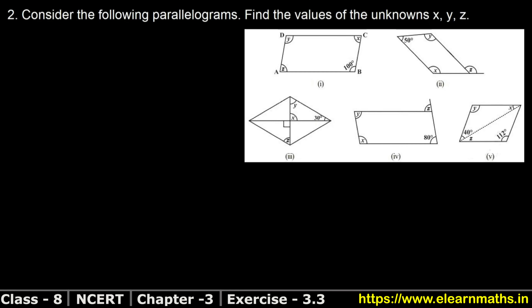Let's do question number two of exercise 3.2, that is Understanding Quadrilaterals. Question number two says: consider the following parallelograms and find the values of unknowns x, y, z. In the figures, x, y, z are given and we have to find their values. So let's look at the first figure. In the first figure, angle B is given as 100 degrees and the remaining three angles are asked.